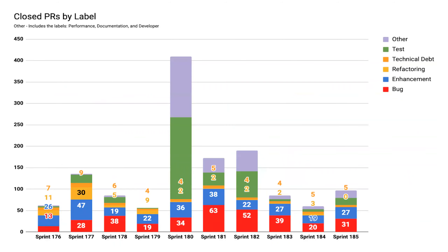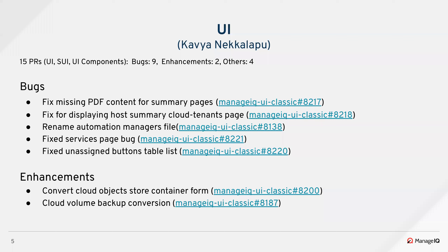In terms of the distribution, 31 of the PRs addressed bugs and 27 addressed enhancements. With that, I will turn it over to Kavya.